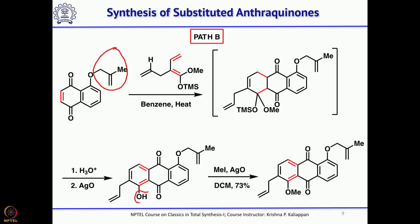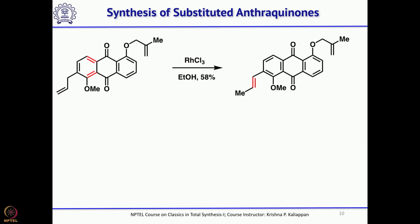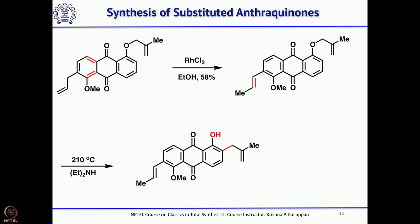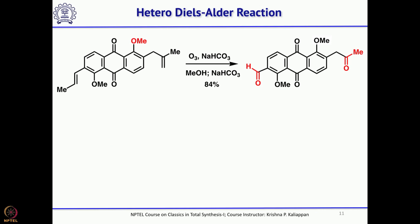They also used another method to prepare the same intermediate, starting from juglone and allylating with a substituted allyl bromide. Then a Diels-Alder reaction with this diene followed by aromatization gave this compound. Then methylate the phenolic hydroxyl group and isomerize the double bond to the internal alkene using rhodium chloride. When heated at 200 degrees, Claisen rearrangement takes place, migrating the allyl group to the ortho position. Methylation of the phenolic hydroxyl followed by ozonolysis gives the ketone on one side and aldehyde on the other — this is the highly substituted anthraquinone moiety which is the core unit of Viniomycinone B2.